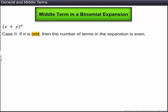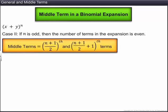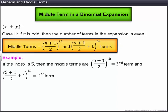If n is odd, then n plus 1 is even. That is, the number of terms in the expansion is n plus 1. In this case, the expansion will have two middle terms. The two middle terms are n plus 1 upon 2th term and n plus 1 upon 2 plus 1th term. For example, if the index is 5, then there will be 6 terms in the expansion and the middle terms will be the third and the fourth terms.